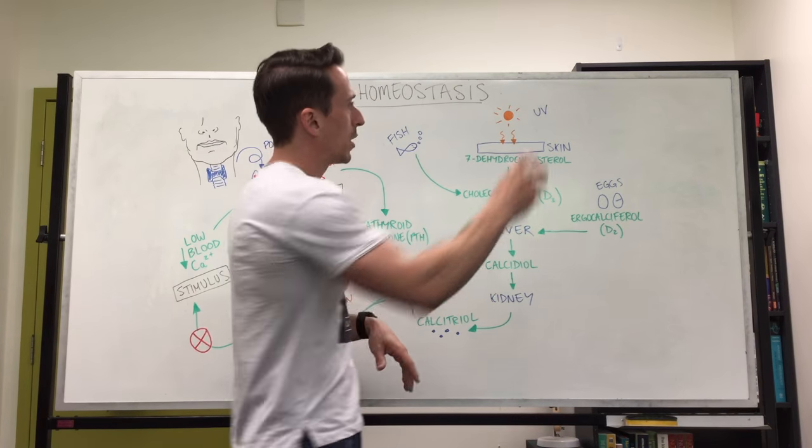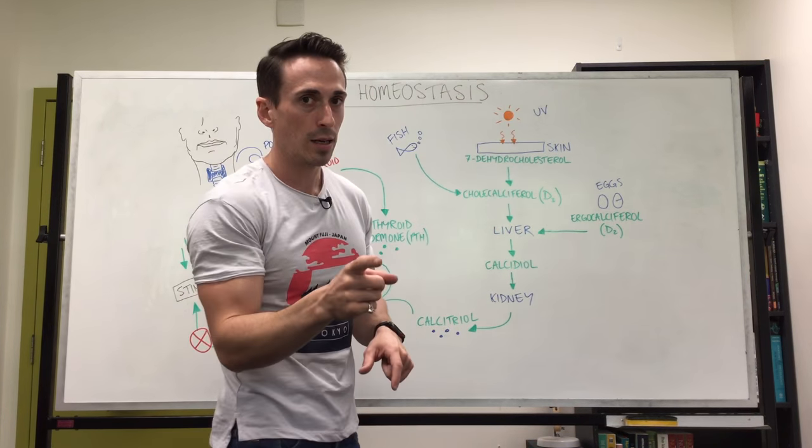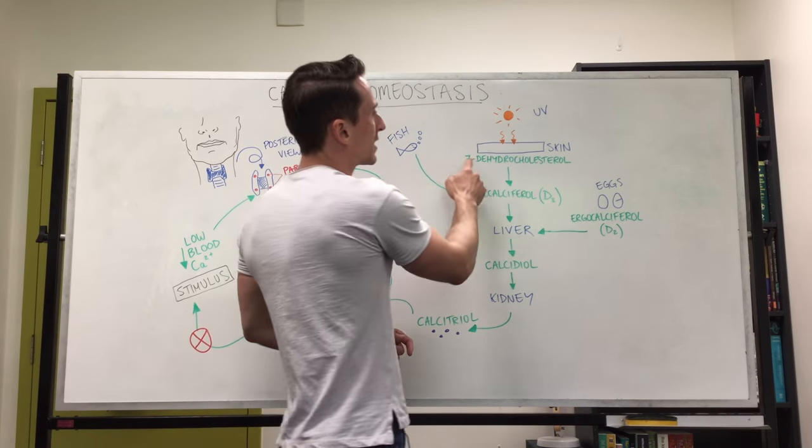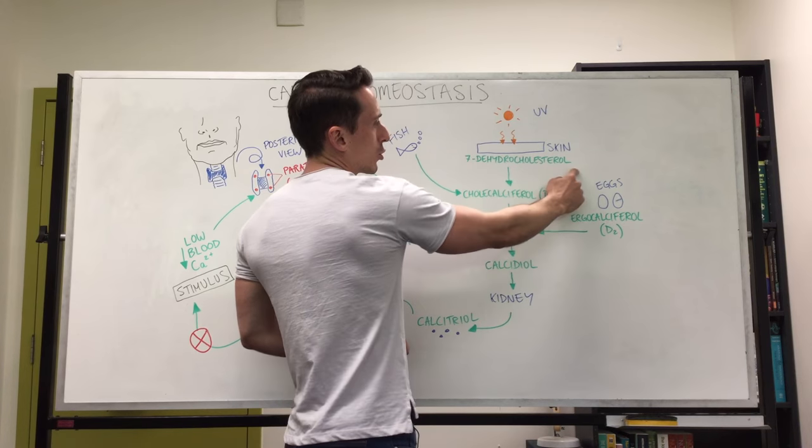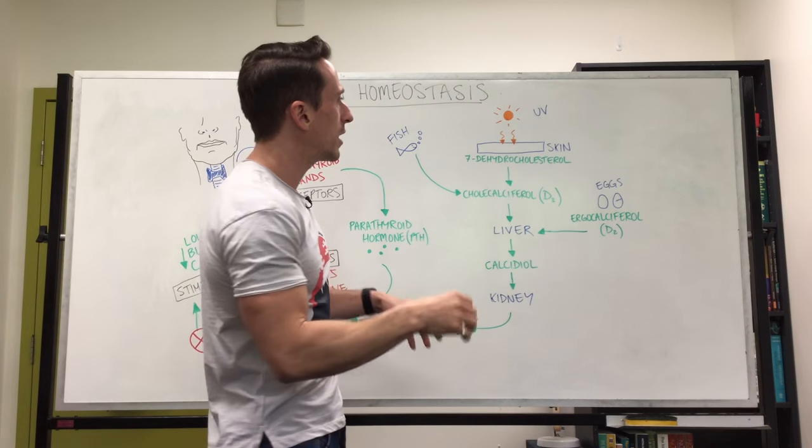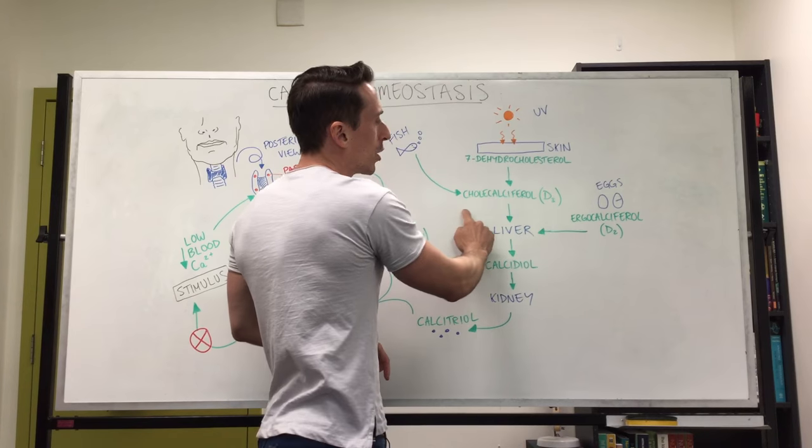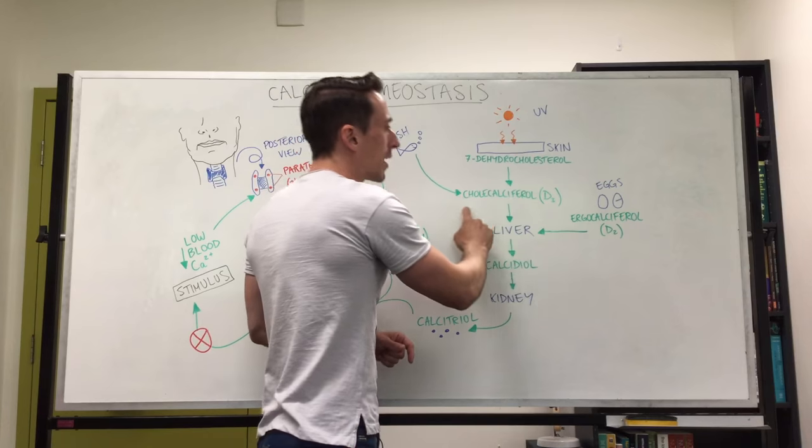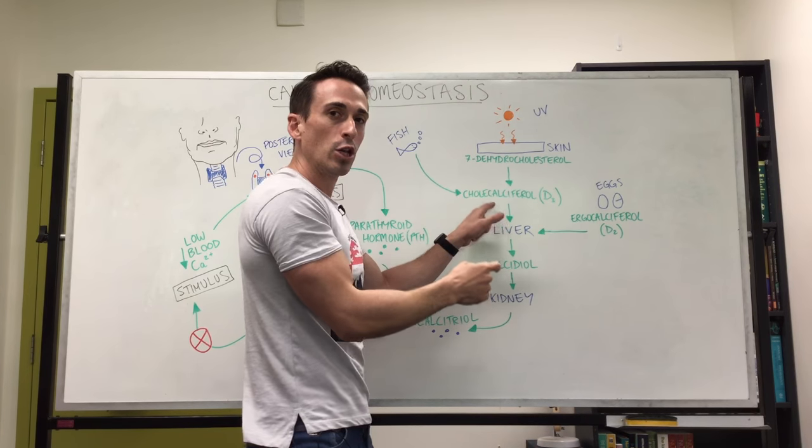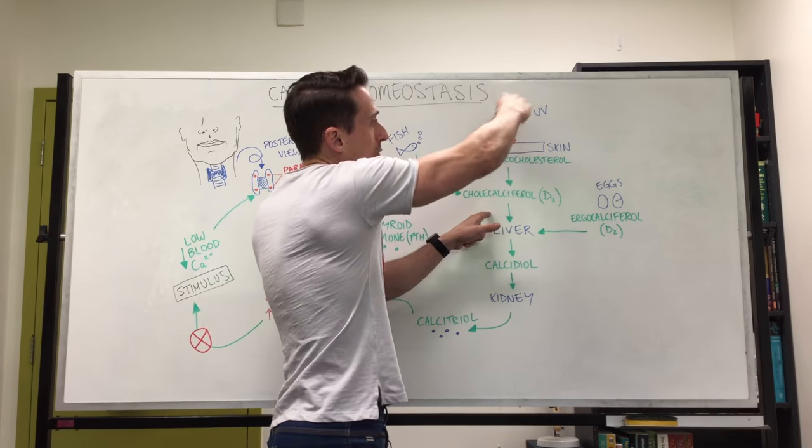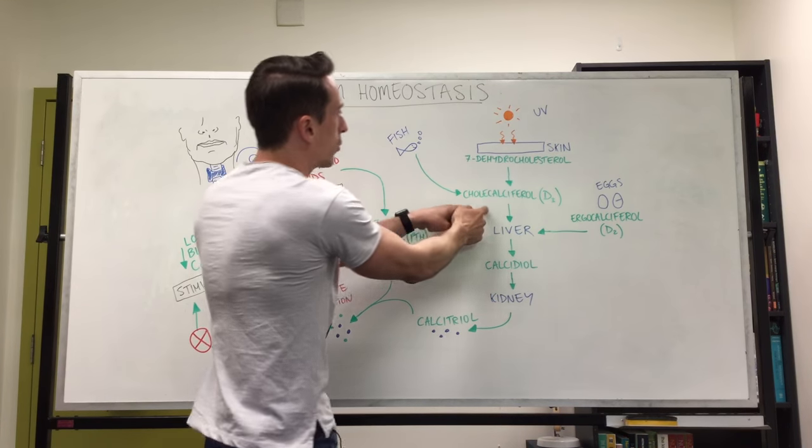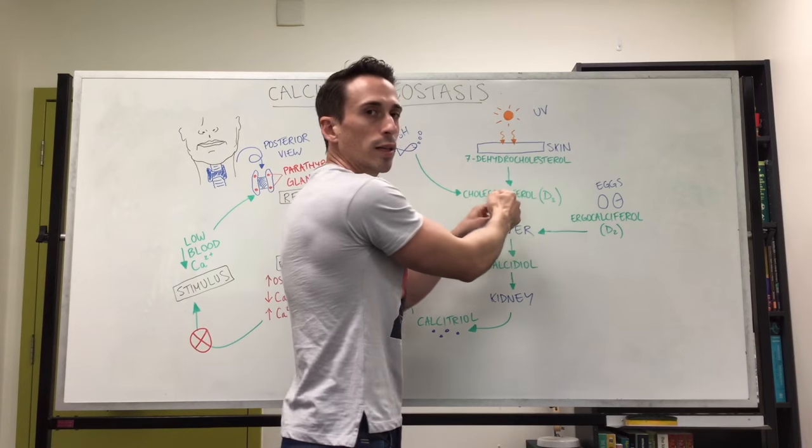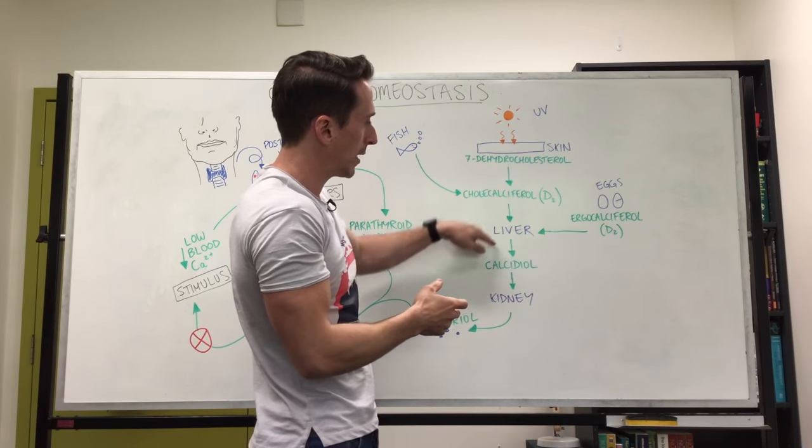At the same time what's happening is that UV light coming from the sun is going to interact with our skin and in our skin we've got a cholesterol derivative which is called 7-dehydrocholesterol. Now this 7-dehydrocholesterol is turned into cholecalciferol also known as D3 from that UV light. Cholecalciferol can also not just be taken from the UV light changing the cholesterol in our skin, we can also get it from fish for example. So we've got this D3 cholecalciferol which is now in our bloodstream and goes to our liver.